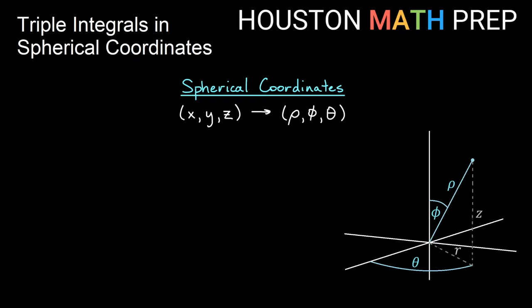In our 3D rectangular space in R3, we have x, y, and z axes — those are our variables in rectangular coordinates. In spherical coordinates, we have variables rho, phi, and theta. I know rho looks like a p, but it's actually the Greek letter rho.